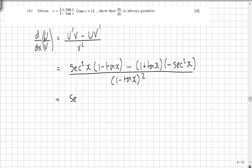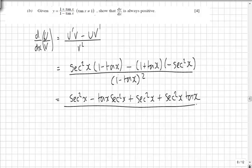Expanding out we can see we have sec squared x minus tan x sec squared x plus sec squared x plus sec squared x tan x all over 1 minus tan x all squared. We can immediately see that this and this cancels